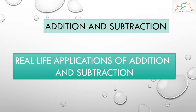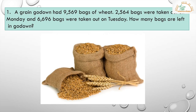Now we will learn to solve word problems involving real-life applications using both addition and subtraction. First we will add the two numbers and then subtract the answer from the sum. Let's solve exercise 2.8. A green godown had 9,569 bags of wheat. 2,564 bags were taken out on Monday, and 6,696 bags were taken out on Tuesday. How many bags are left in the godown?